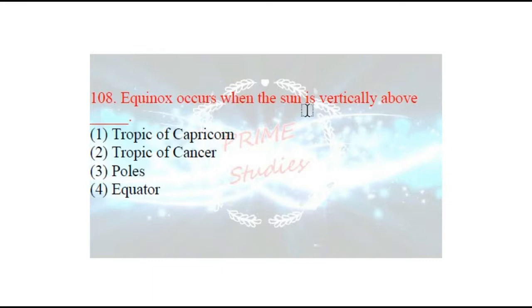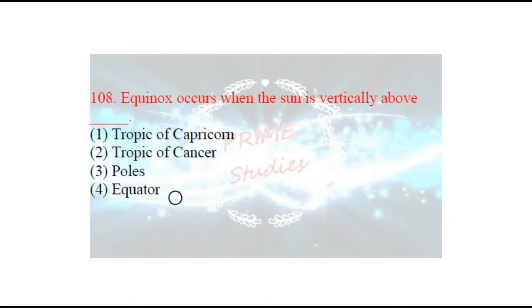Next question: equinox occurs when the sun is vertically above which line? Equinox bolte hain hum vishuv ko. Vishuv ki condition kab aati hai? Vishuv kya hota hai — jab din aur raat barabar hote hain. Toh yeh condition tab aati hai jab surya hamare rekha ke upar lambvat chamakta hai. The right answer is: equator.